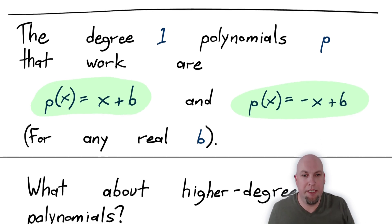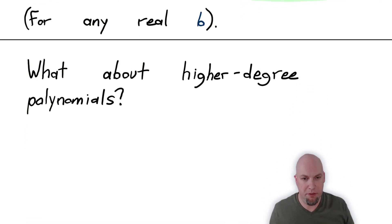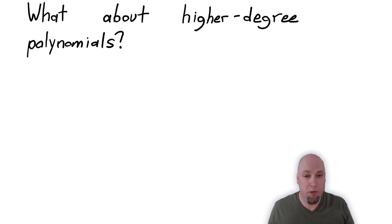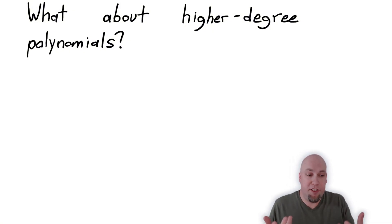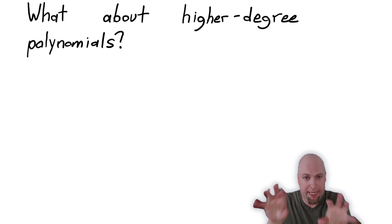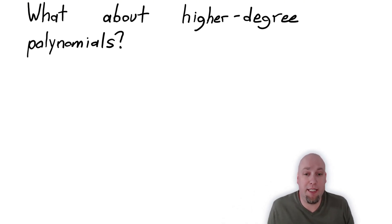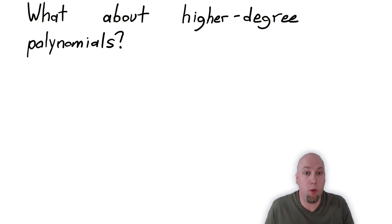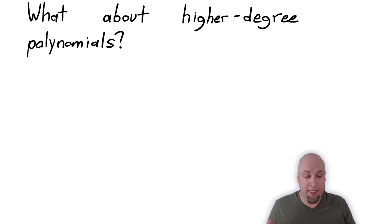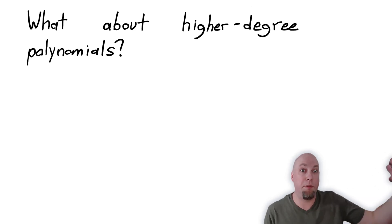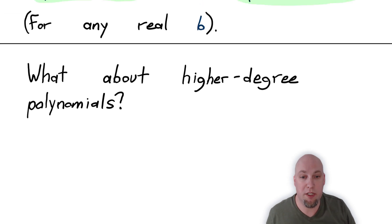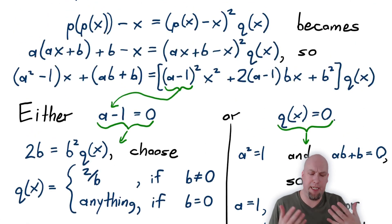That's not a complete solution yet — we've only addressed linear polynomials. What about degree two quadratics, degree three cubics, and higher degree polynomials? This is where it gets trickier. You might try plugging in a degree two or degree three polynomial and matching coefficients, and that's a fine thing to do. But unfortunately, you'll find there are no solutions that are quadratic, cubic, or even quartic. So we need a more systematic approach to rule out all higher degree polynomials.